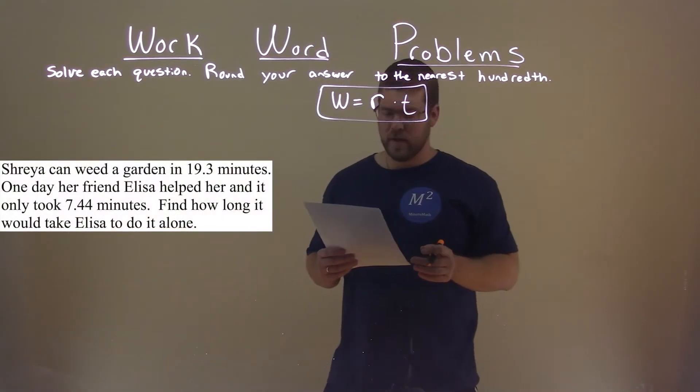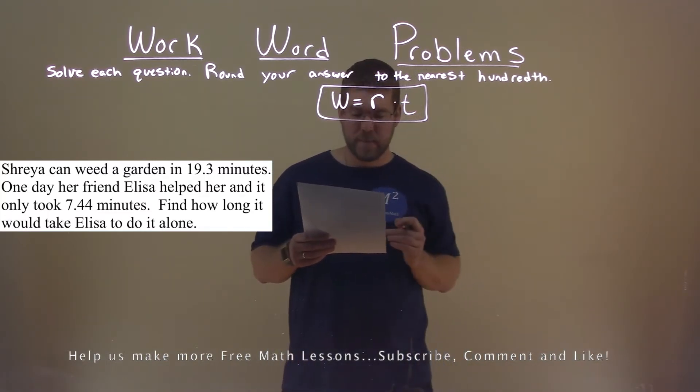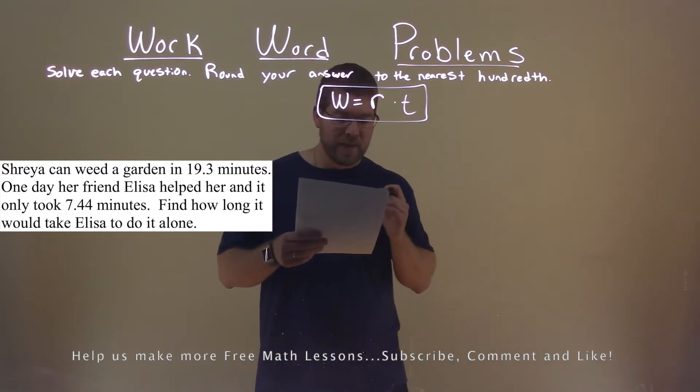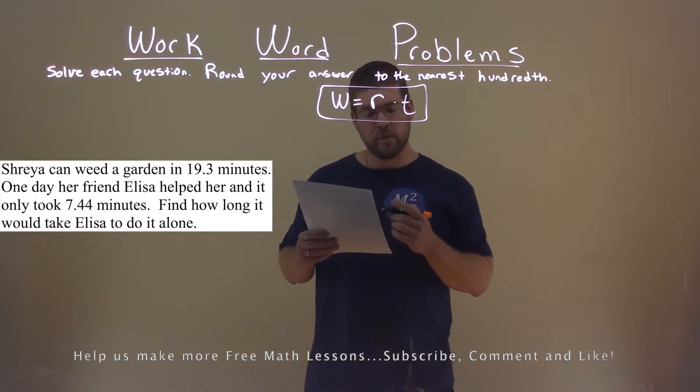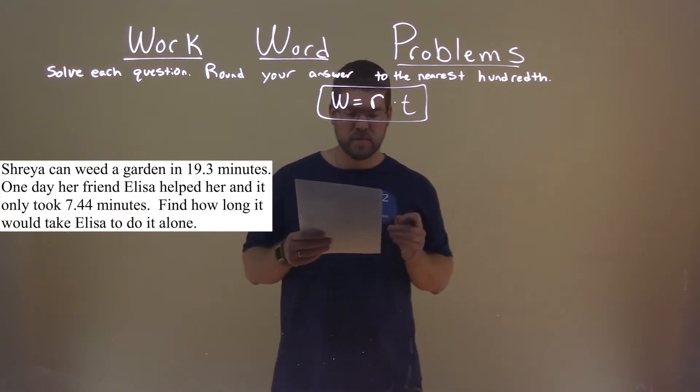We're given this problem right here. Shreya can weed a garden in 19.3 minutes. One day her friend Eliza helped her, and it only took 7.44 minutes. Find how long it would take Eliza to do it alone.